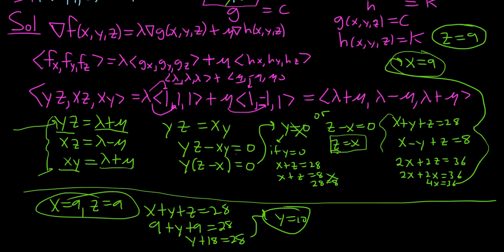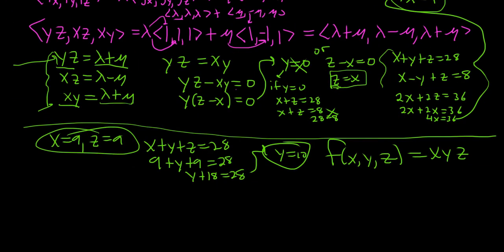All we do now is plug it back into our original function. The original function was xyz. So now we just plug these numbers back in. And that's going to give us the maximum. So f of, let's see, x is 9, y is 10, z was 9. That's going to be 9 times 10 times 9. I'm pretty sure it's 810. Let's see, 81 times 10. Yeah, 810.